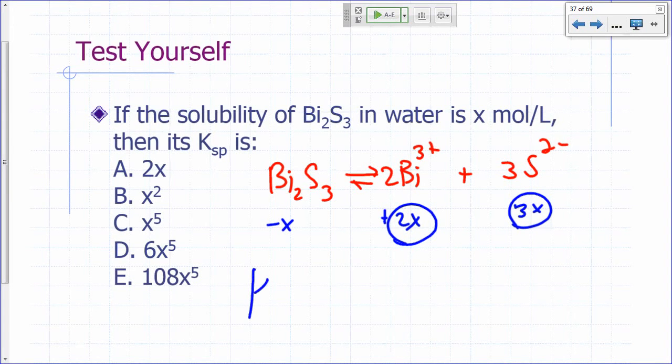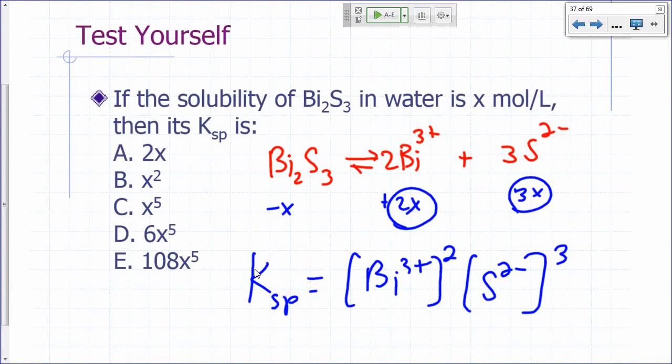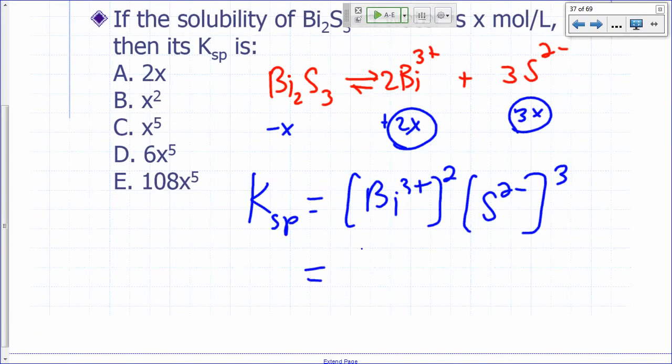KSP equals [Bi³⁺] raised to what power? 2. [S²⁻] raised to what power? 3. And what's the concentration of bismuth? 2X, raised to the power of 2. What's the concentration of sulfide? 3X raised to what power? 3.